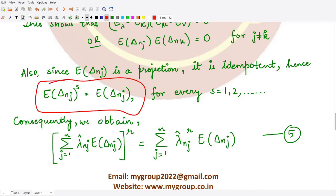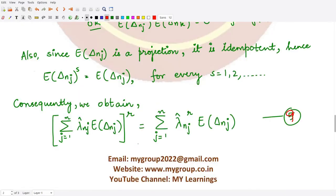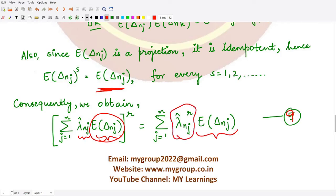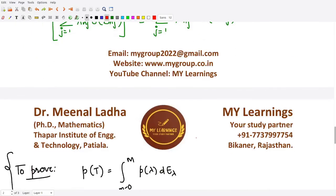Using this result, we obtain equation 9 — according to the numbering from part a. If we take the sum Σ λ_(n,j)^r · E_Δ(n,j), the power r comes up on the λ term. On the E_Δ(n,j) term, because it is idempotent being a projection, no power remains. So equation 9 has the power only on the λ term.